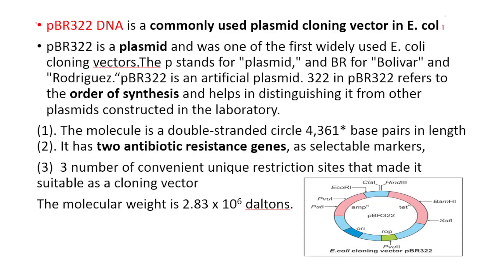PBR322 DNA is an artificial plasmid — it is the commonly used plasmid cloning vector. P stands for plasmid, BR stands for Bolivar and Rodrigues. 322 means it is the order of synthesis, helping to distinguish it from other plasmids constructed in the laboratory.